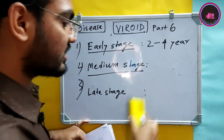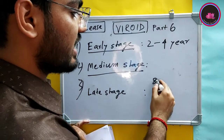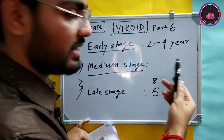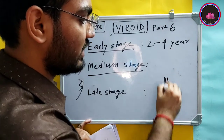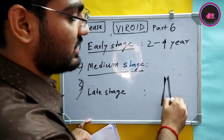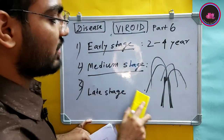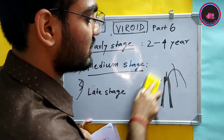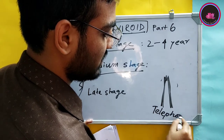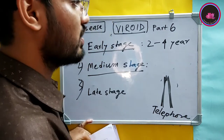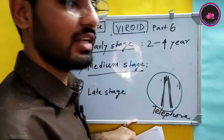In the late stage, which comes about 6 years after the early stage — meaning approximately 8 years after plantation — there is complete destruction of the leaves. There will be no leaves on the plant, and it will look like a standing telephone pole. This appearance — a coconut plantation resembling telephone poles — is a commonly asked exam question.